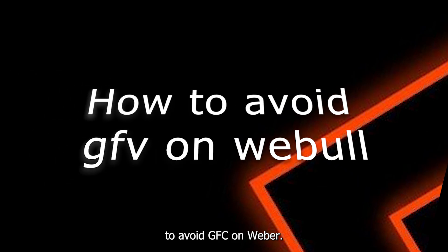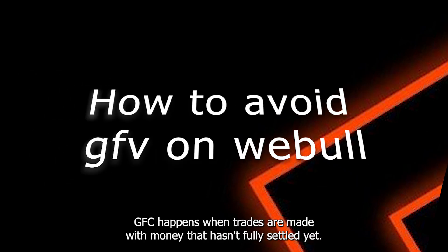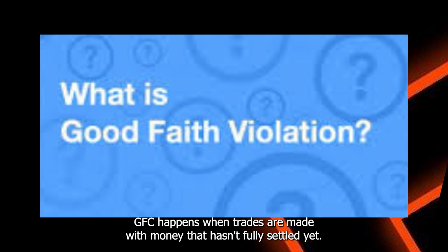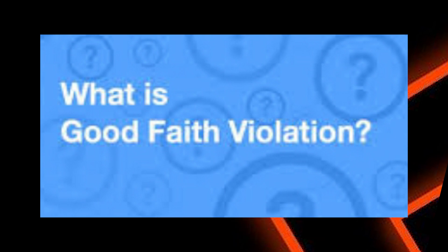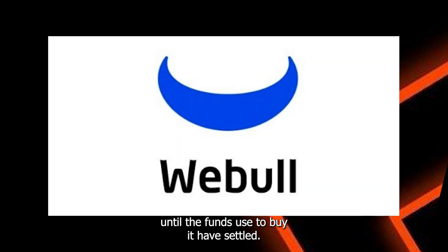How to Avoid GFV on Webull. GFV happens when trades are made with money that hasn't fully settled yet, violating the good faith agreement that assumes you will hold the stock until the funds used to buy it have settled.